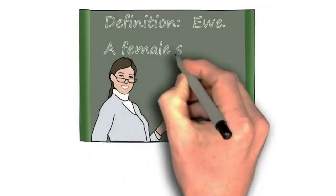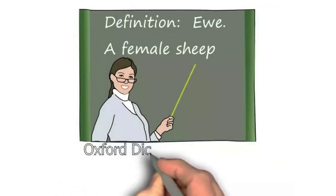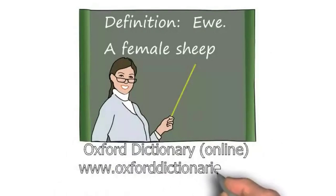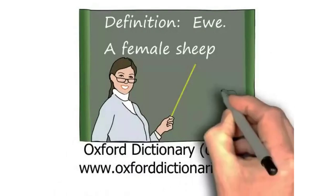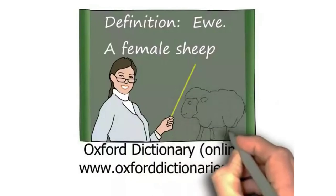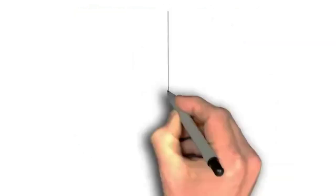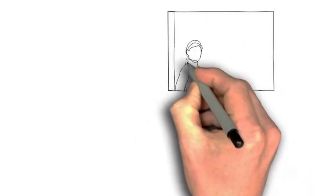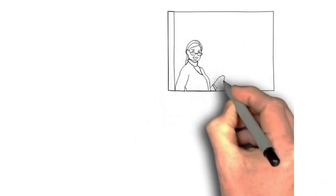No, no, actually I'm going to take you on a path that might not be too enjoyable. Here we go. A female sheep. Okay, what is the sheep? This is out of Oxford Dictionary.